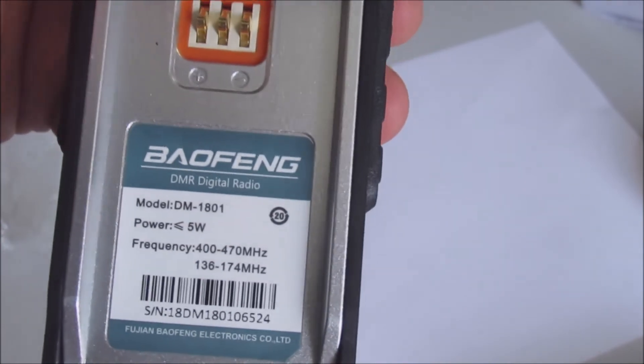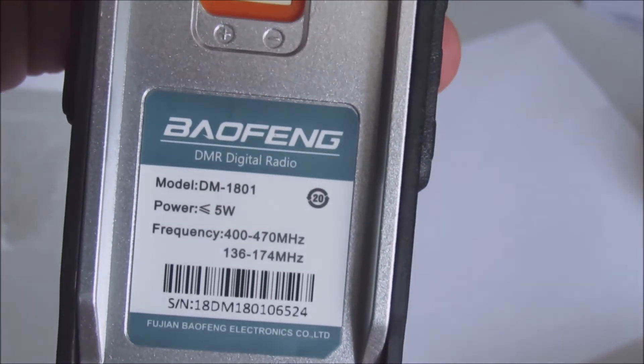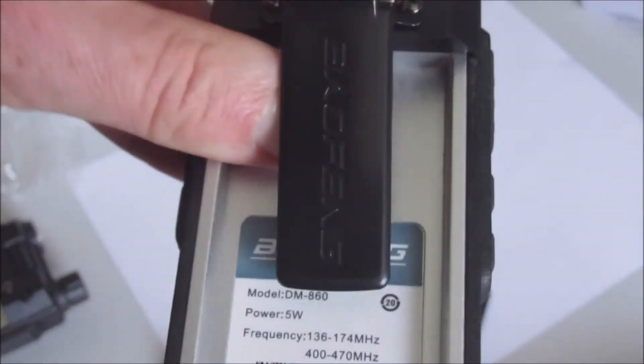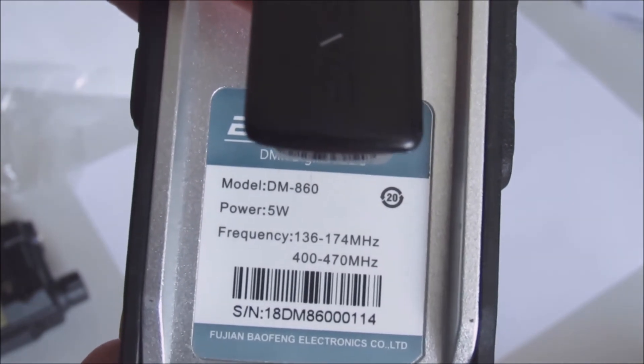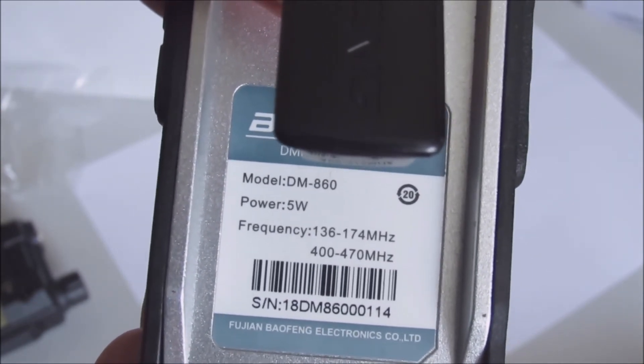We'll see this one is a 1801 DM1801, and this one, I'll take the battery off and it should be able to see if I lift the belt clip, that's a DM860. But they're absolutely identical. Again, the batteries are interchangeable between them.